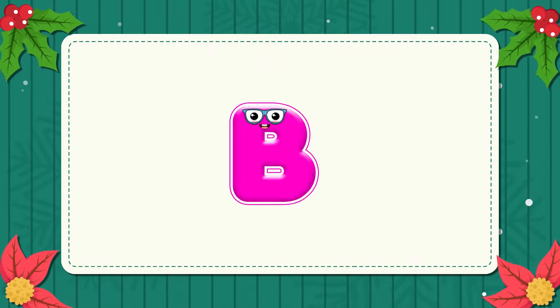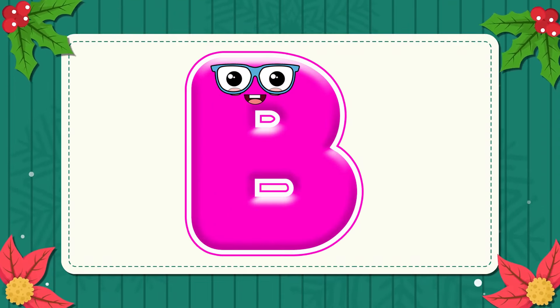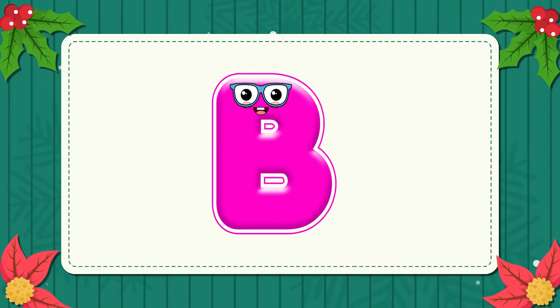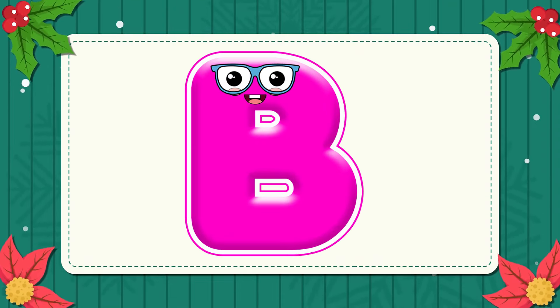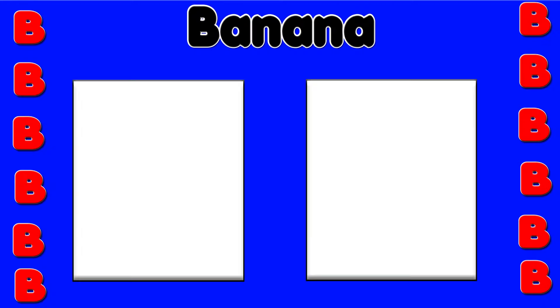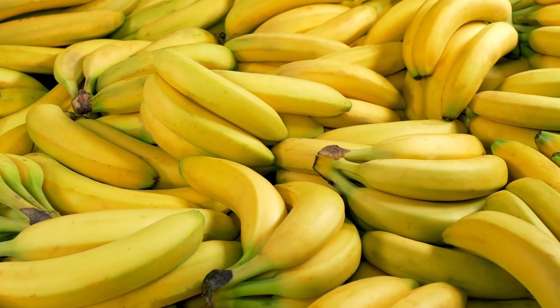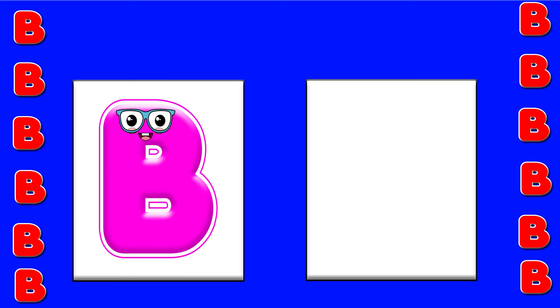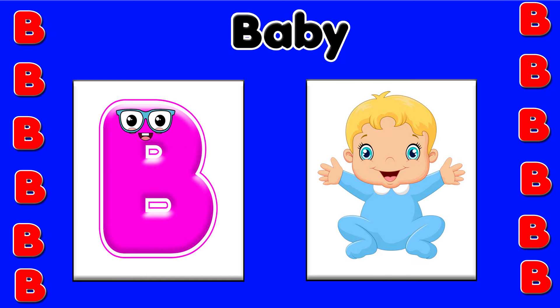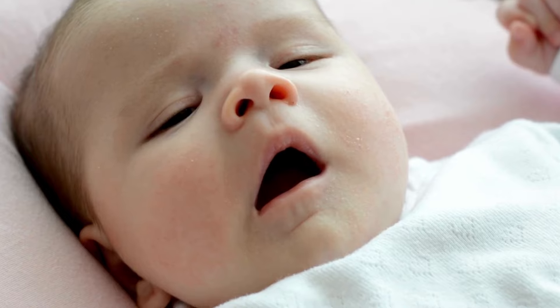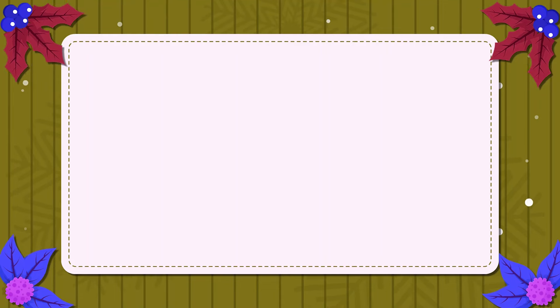B. This is the letter B. B is for banana — bu, bu, banana. B is for baby — bu, bu, bu.